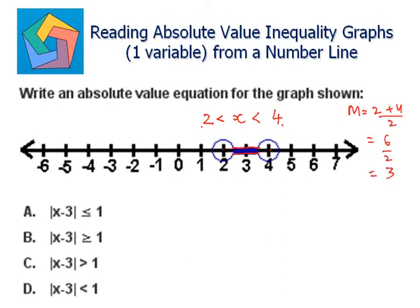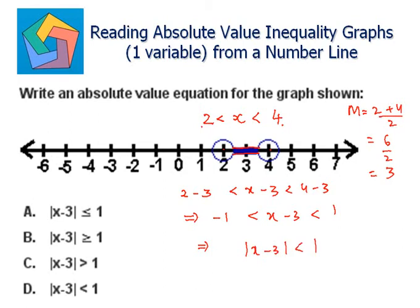So we will subtract 3 from all sides: 2 minus 3 is less than x minus 3 is less than 4 minus 3. This implies negative 1 is less than x minus 3 is less than 1. This implies the absolute value of x minus 3 is less than 1, which is the answer.